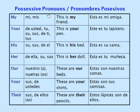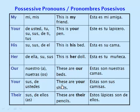Possessive pronouns. My — this is my friend. Your — this is your pen. His — this is his bed. Her — this is her doll. Our — these are our beds. Your — these are your shirts. Their — these are their pencils.